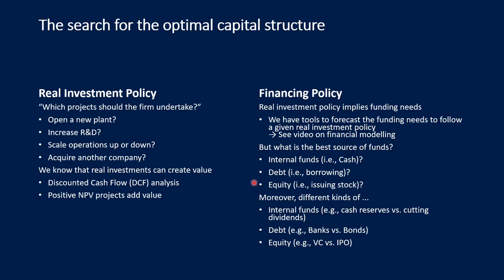Moreover, today we have different kinds of internal funding — cash reserves, the possibility to cut dividends, and so on. We have different kinds of debt: bank debt versus bond debt, mezzanine capital, and similar instruments. And we have different methods to issue equity, like getting in venture capital or doing an IPO. So we have many different choices.